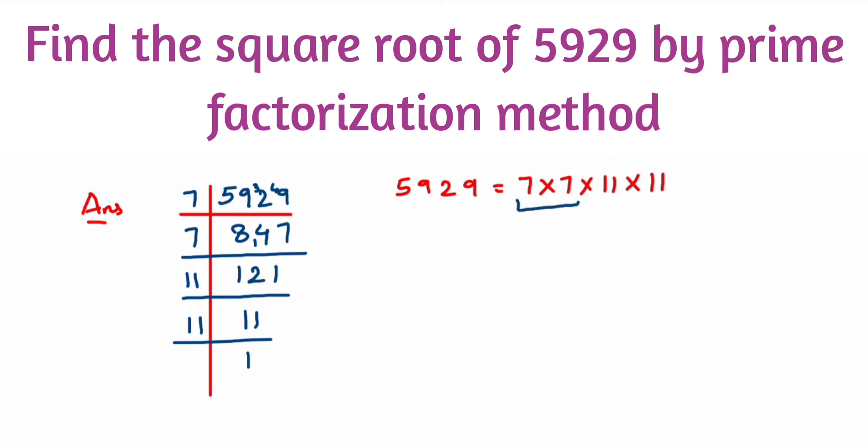When you pair up, 7 × 7 and 11 × 11, we're going to get two pairs here. So when you find the square root, square root of 5929, from each pair you take one single factor. From here I'll take 11 and 7.